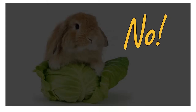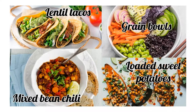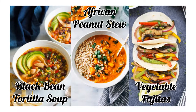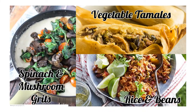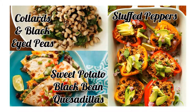So what should I eat? This is not a lettuce and tomato diet. This is not a rabbit food diet. A lot of people think a plant-based diet means a vegetable-based diet, and they're set up for failure if all they're going to eat is vegetables — you cannot sustain yourself on lettuce, tomatoes, and vegetables alone. So this is what it looks like: lentil tacos, mixed bean chili, grain bowls, loaded sweet potatoes, African peanut stew, black bean tortilla soup, vegetable fajitas, spinach and mushroom grits, vegetable tamales, rice and beans, collards, black-eyed peas, sweet potato black bean quesadillas, stuffed peppers. A lot of people overestimate how hard it will be to switch to a plant-based diet, but once you get going, it is quite easy to continue.